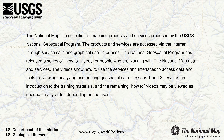The National Map is a collection of mapping products and services produced by the USGS National Geospatial Program. The products and services are accessed via the internet through service calls and graphical user interfaces. The National Geospatial Program has released a series of how-to videos for people who are working with the National Map data and services. The videos show how to use the services and interfaces to access data and tools for viewing, analyzing, and printing geospatial data.